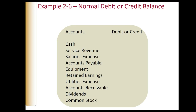In exercise 2-6, we have common accounts and we'll determine whether each has a normal debit or credit balance. Remember: assets, expenses, and dividends always have a normal debit balance. Liabilities, revenues, and stockholders' equity have a normal credit balance. If we know what type of account it is, we automatically know its normal balance.